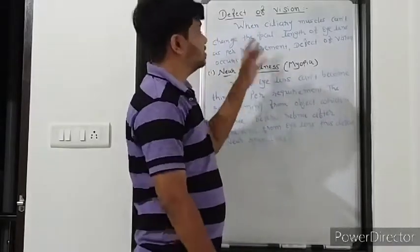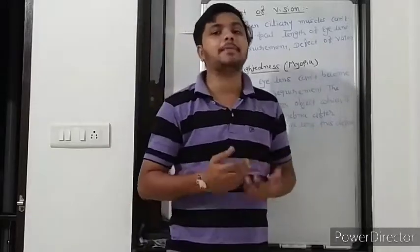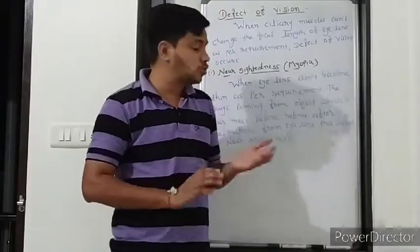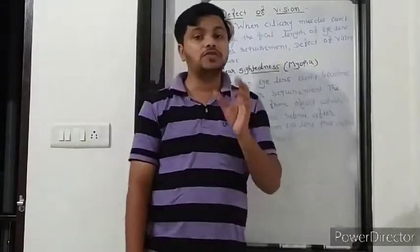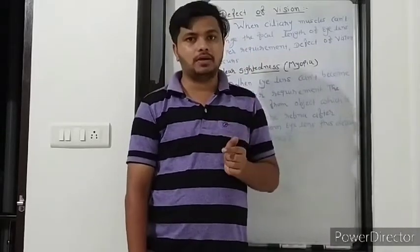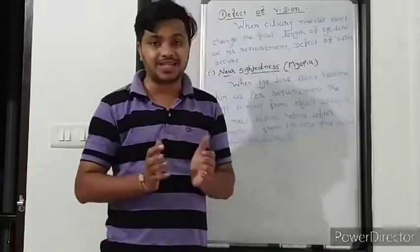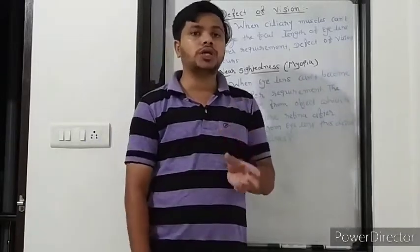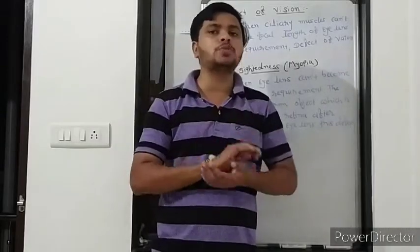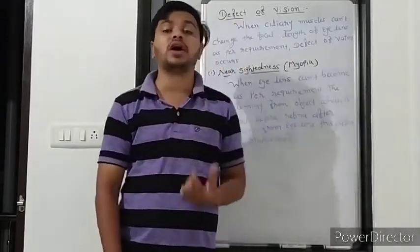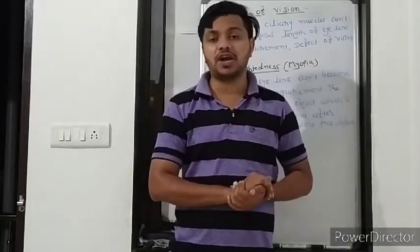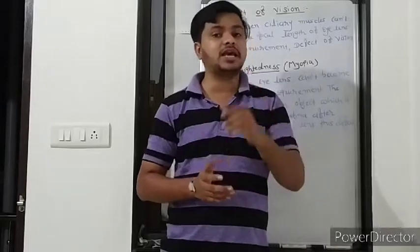First of all, I am going to explain the definition of Defect of Vision. As you know, in our eye the most important part is the eye lens, which makes the image of an object on the retina. Because of that we can see the object clearly. But the eye lens must change its focal length as per the distance of an object, and for that the ciliary muscles help.